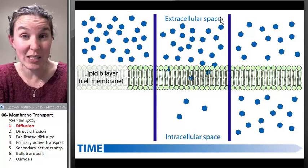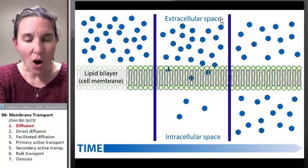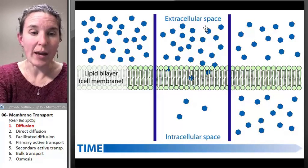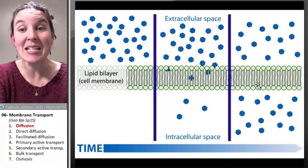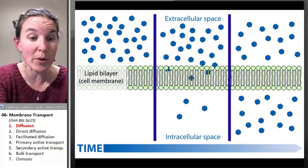Diffusion is actually really slow and it's all random. Okay, let's look at the kinds of things that can directly diffuse across the cell membrane.